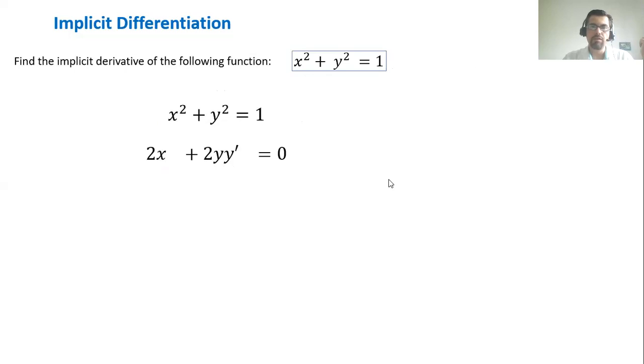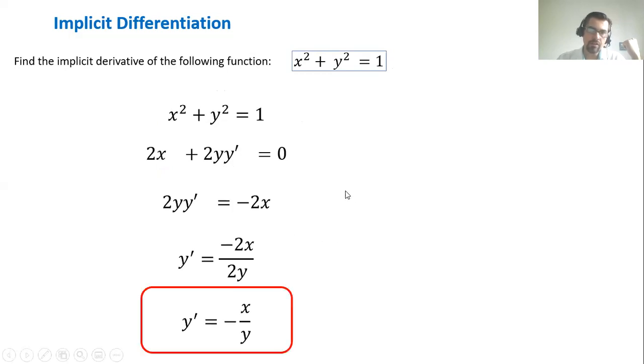So we differentiate both sides of the equation. Next, we have to solve for y prime. We subtract 2x on both sides. We divide both sides by 2y and simplify. The final answer is y prime equals negative x over y. This is the derivative of y with respect to x.